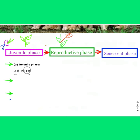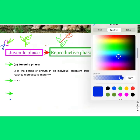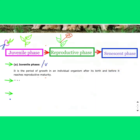The juvenile phase is the period of growth in an individual organism after its birth and before it reaches reproductive maturity. This is the period of growth before attaining reproductive maturity. In the case of plants, the juvenile phase is also called the vegetative phase.